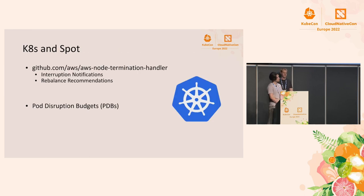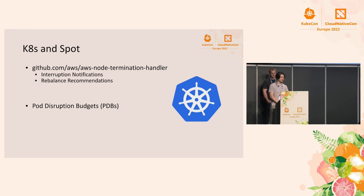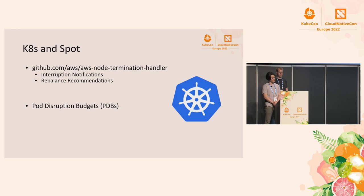Kubernetes and Spot work super well together. Within Spot and your cluster, you might want to have things programmatically configured to watch for terminations — these interruption notifications. Within AWS, Brandon has worked on the AWS Node Termination Handler. You can configure this within your clusters to watch for interruption notifications and rebalance recommendations.